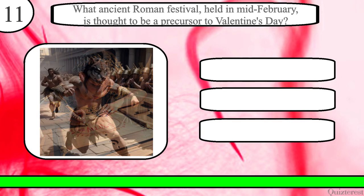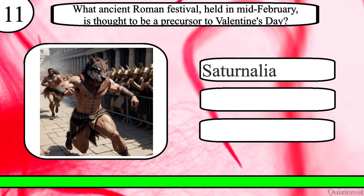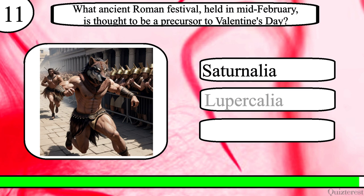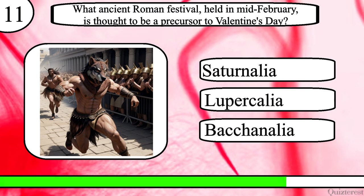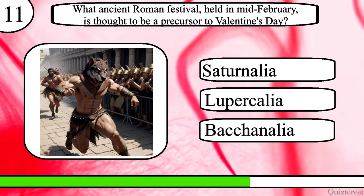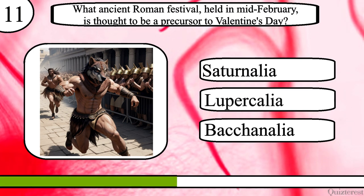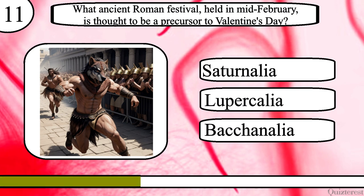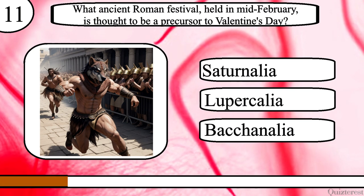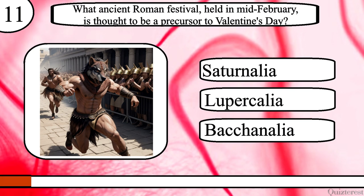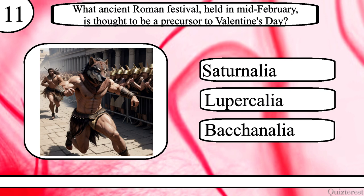Question 11. What ancient Roman festival held in mid-February is thought to be a precursor to Valentine's Day? Saturnalia, Lupercalia or Bacchanalia? The correct answer is Lupercalia.